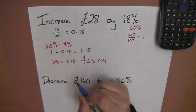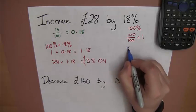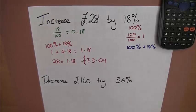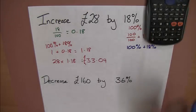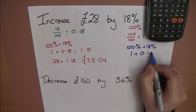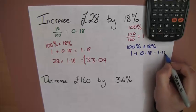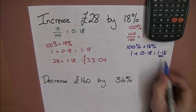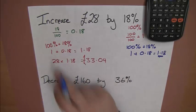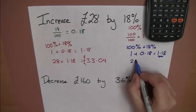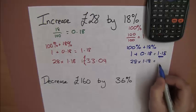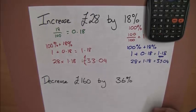So, we're increasing 28 pounds by 18%. So, we're starting with 100%, and we're adding on 18% to it. But we need that as a decimal for it to work on our calculator. So, that's 1 plus 0.18, which is 1.18. We then take this, what we call a multiplier, and we times it by the 28 pounds. So, we're doing 28 times 1.18, and that gets us our answer there.